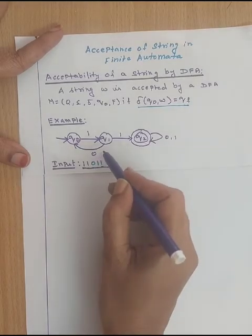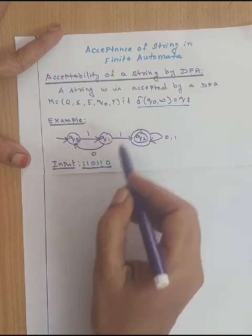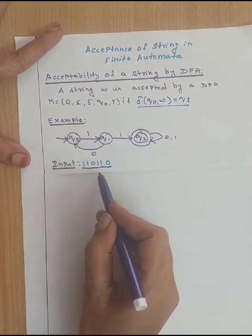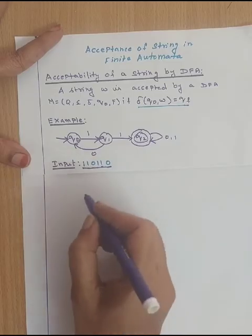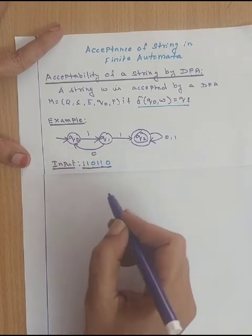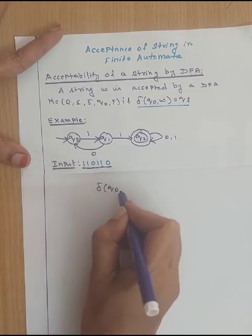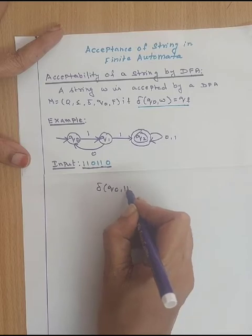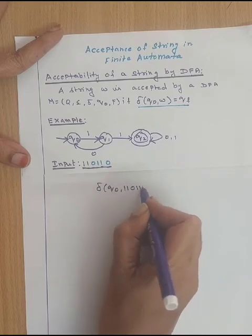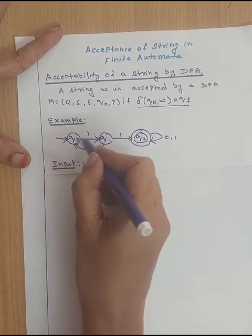Let us discuss an example. We have three states Q0, Q1 and Q2, and the input is 110110. Let us check whether this input is accepted by the DFA or not. Start with the initial state. Delta of Q0, take the input as 110110. Check with the first digit of the input string, that is delta of Q0, 1.